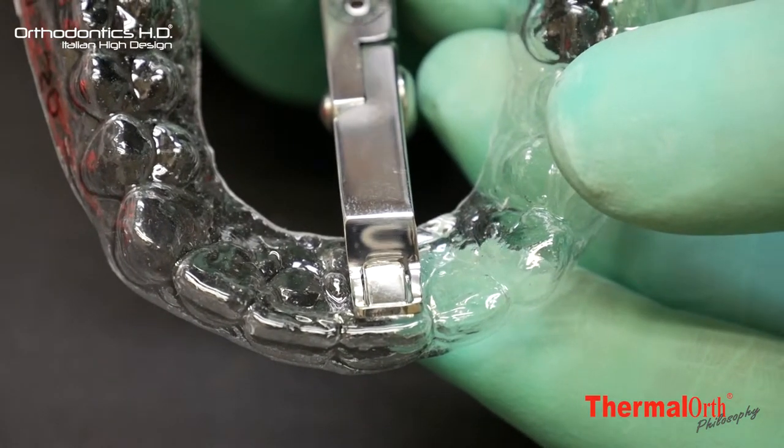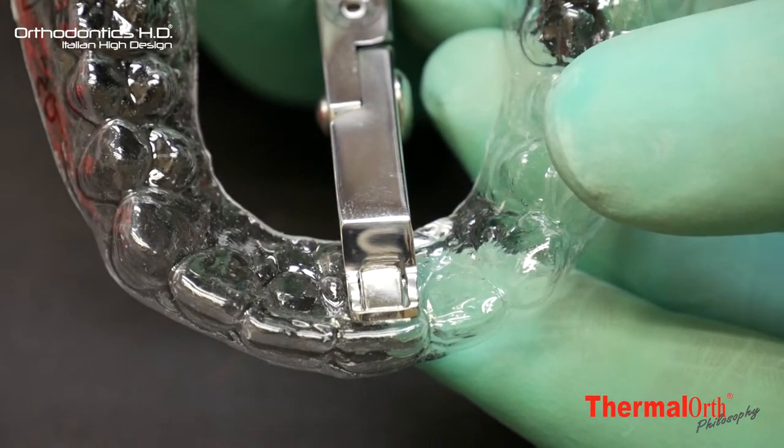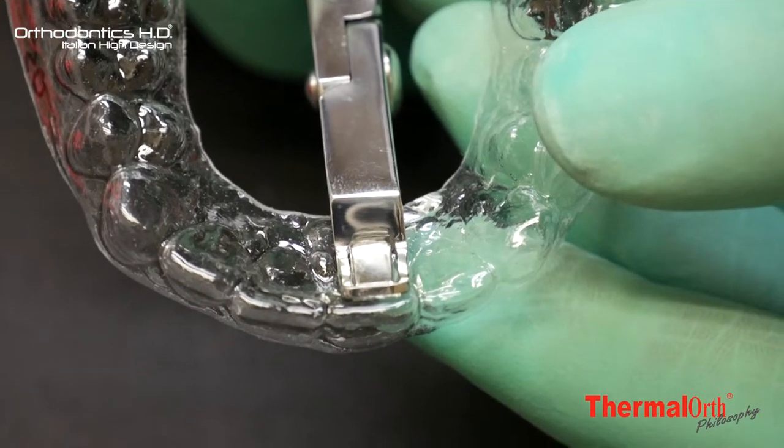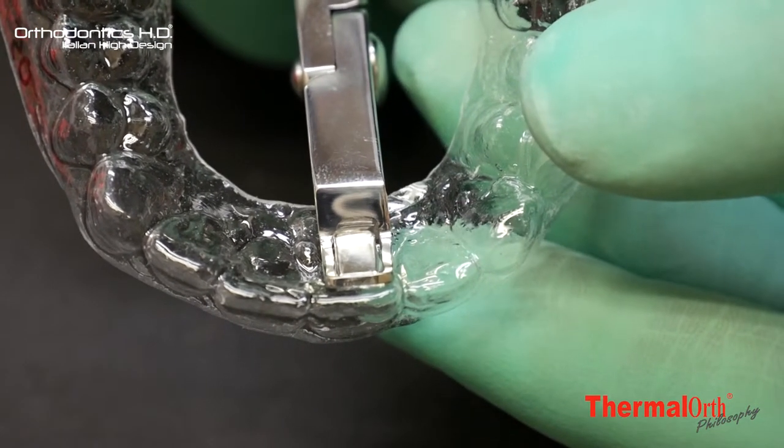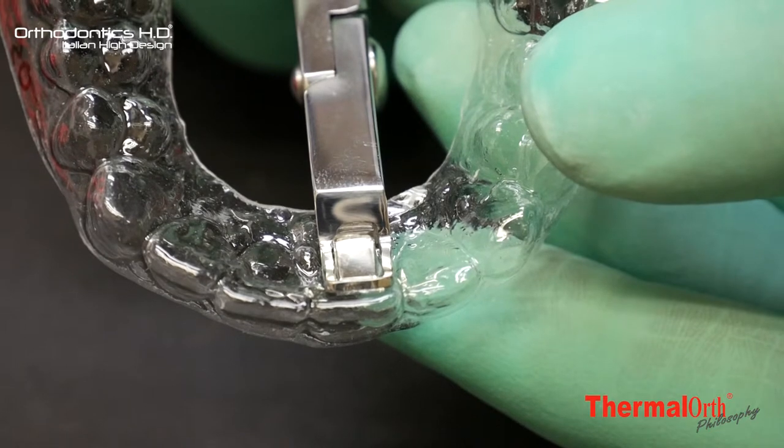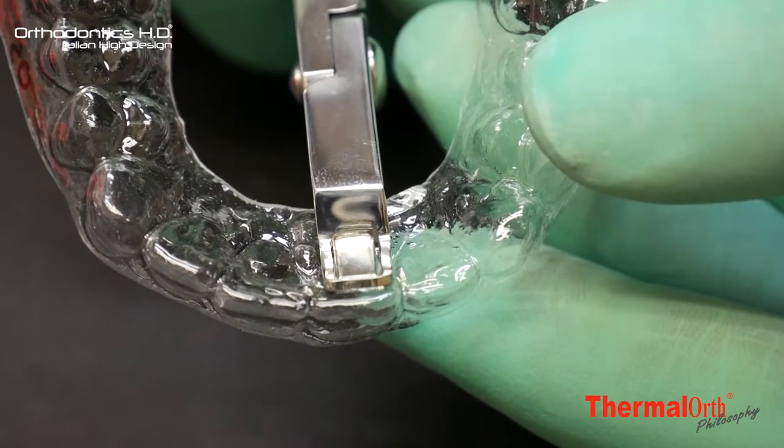The screw, previously adjusted, allows the planned bite plane size. Cool it down by air water for 15 seconds and gently remove the plier from the aligner.